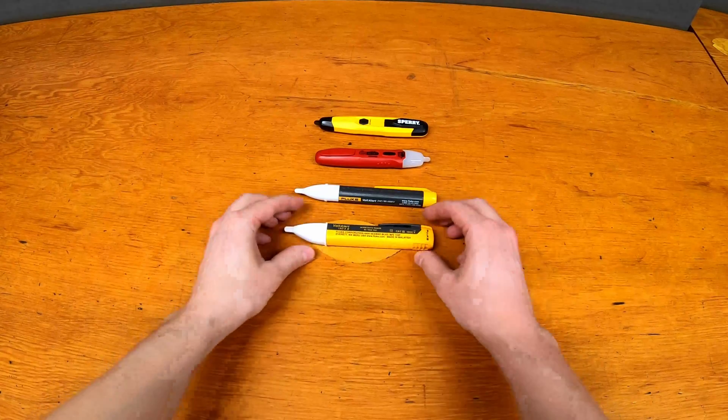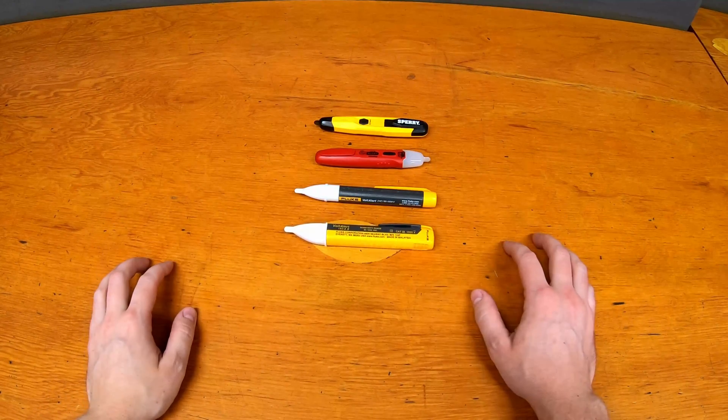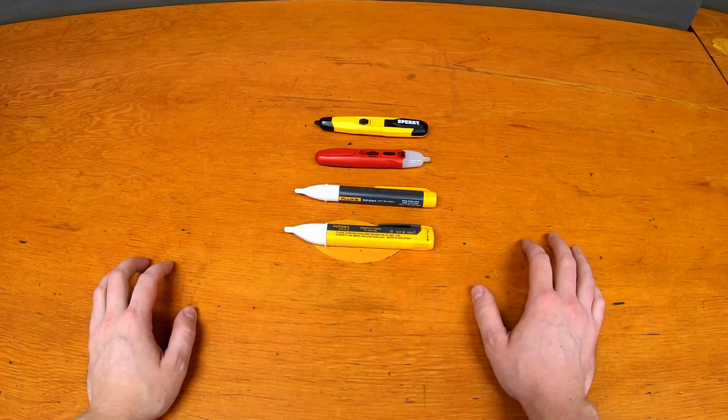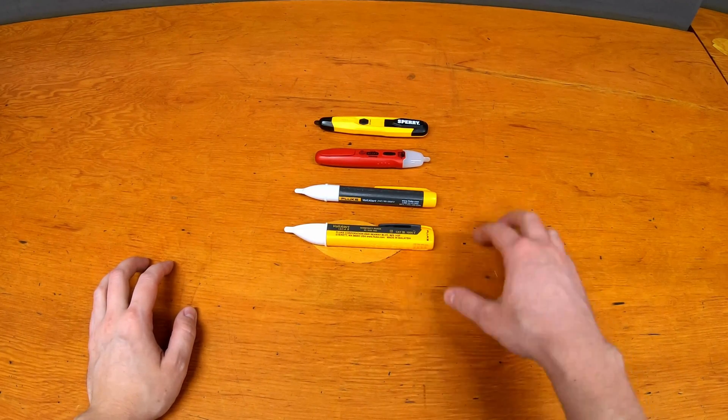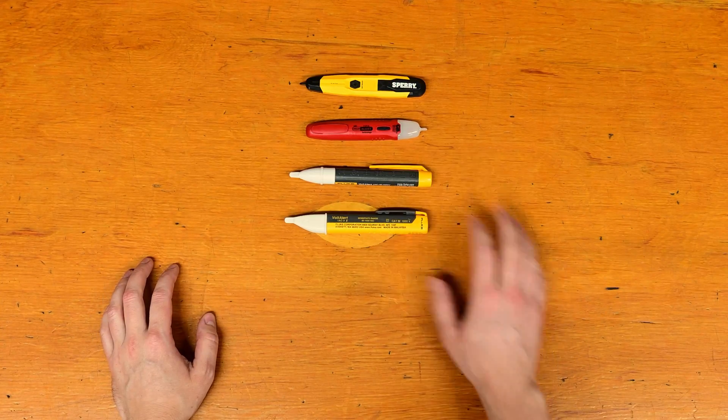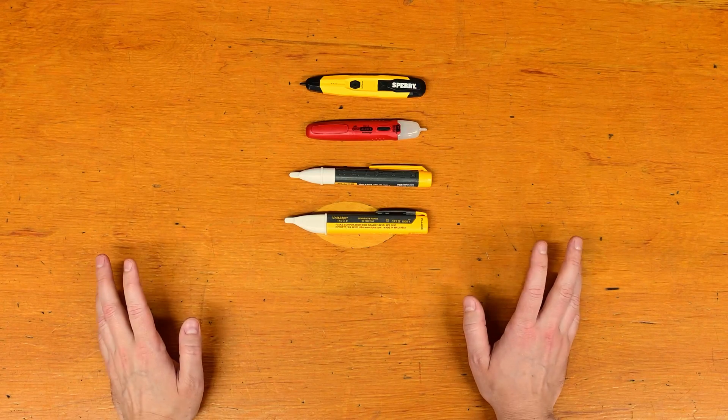They are small battery-powered devices that when they get close to AC line voltage, they light up or beep or make you aware if that circuit is energized. Good for checking things like extension cords or light bulbs or wall outlets, and especially when you're inside an electrical panel to make sure things are not energized before you stick your hands where they don't belong.